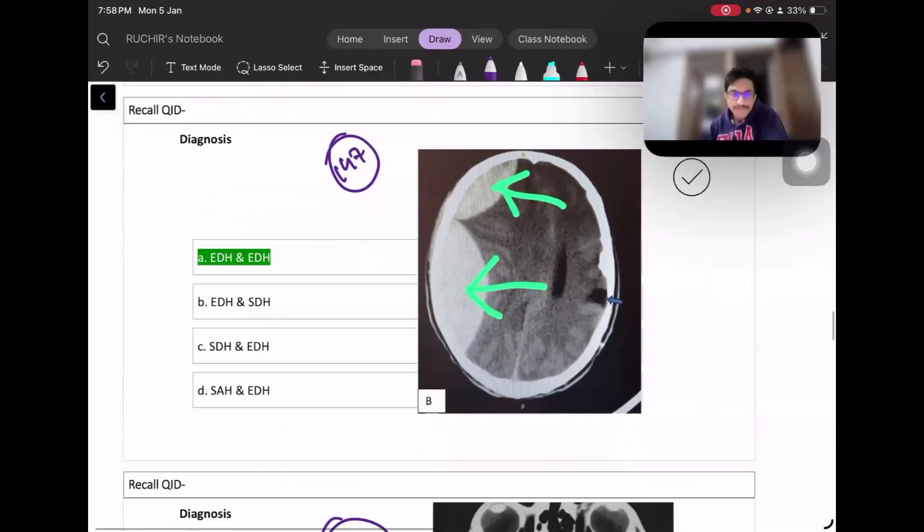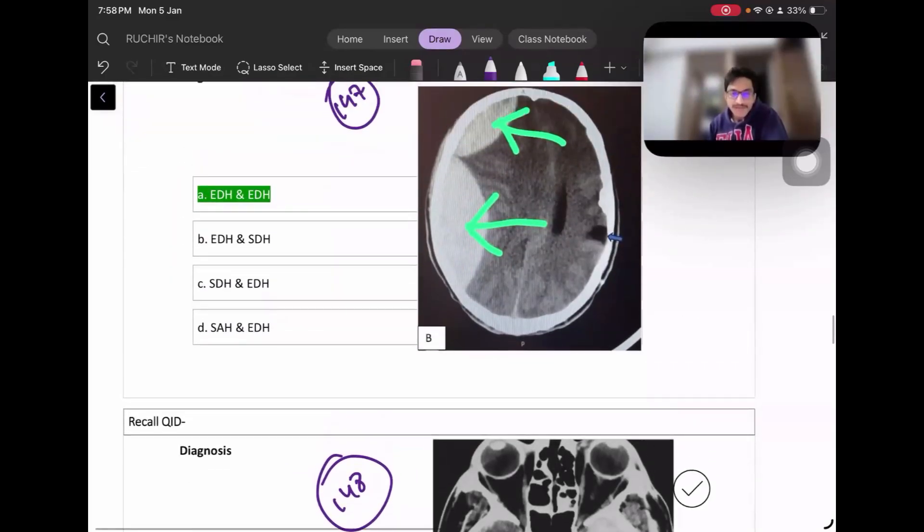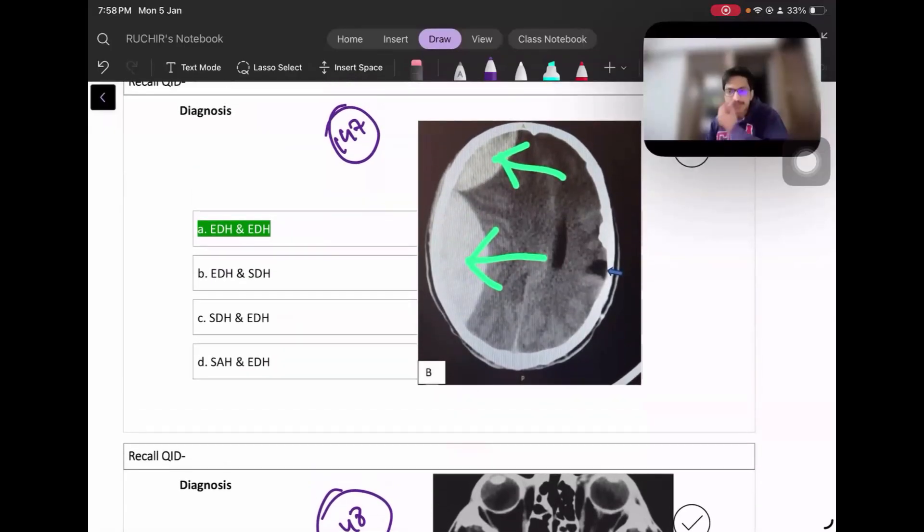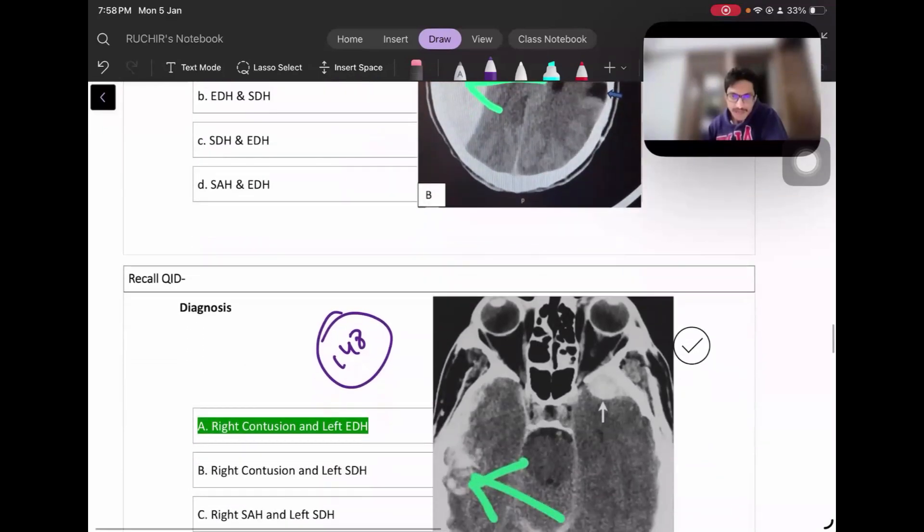Then you have this image - the neuro images were pretty straightforward. This is bilateral - both sides - two EDH given. I think no issues in this as well. Something like this was given. This is an image of two EDH which are marked by the arrows.